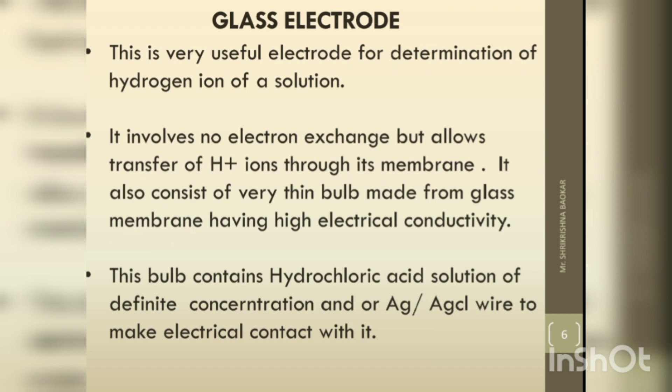The glass electrode is a very useful electrode for the determination of hydrogen ions of a solution — hydrogen ions meaning pH. It involves no electron exchange but allows transfer of H+ ions to its membrane.